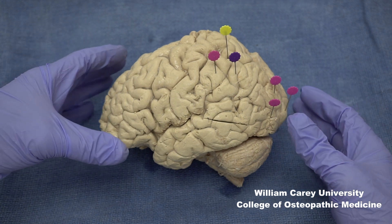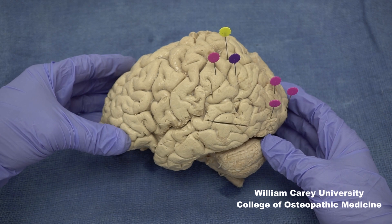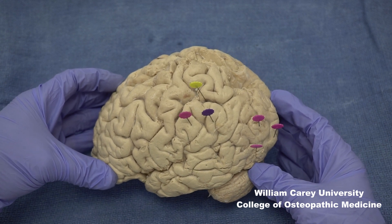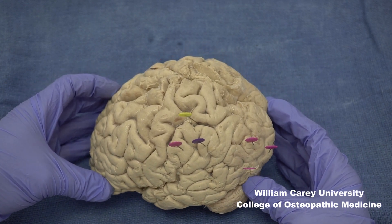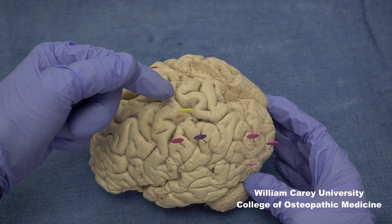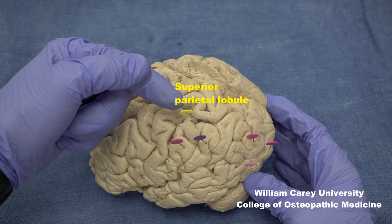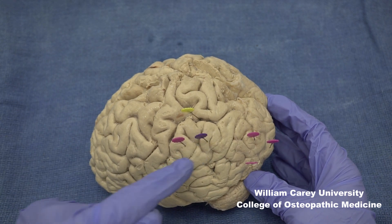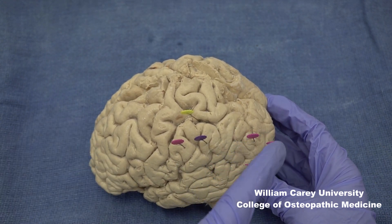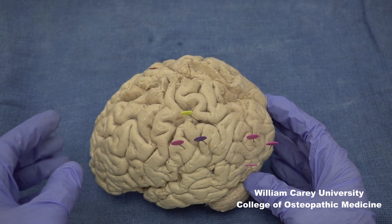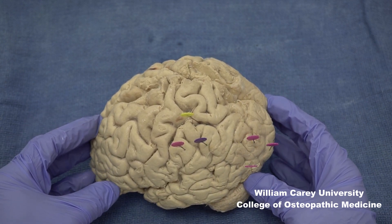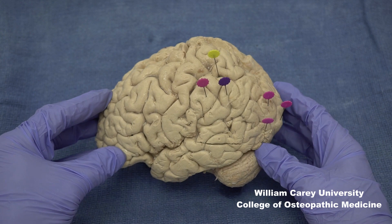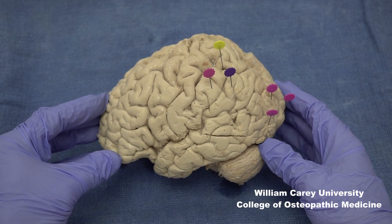At this time, I would like to give you a three-dimensional view by turning the specimen toward the dorsal perspective, showing the intraparietal sulcus with the yellow pin. The superior parietal lobule is above it, and the inferior parietal lobule underneath it. Finally, the group of pins in the occipital lobe marks the lateral occipital gyri. We slowly turn the specimen back to the lateral view to finish the demonstration of the lobe surfaces on the lateral surface.